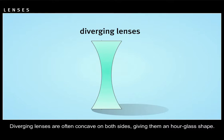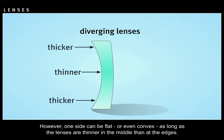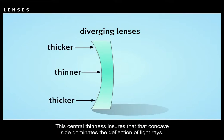Diverging lenses are often concave on both sides, giving them an hourglass shape. However, one side can be flat or even convex as long as the lenses are thinner in the middle than at the edges. This central thinness ensures that the concave side dominates the deflection of light rays.